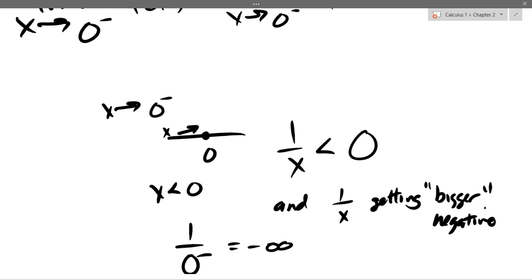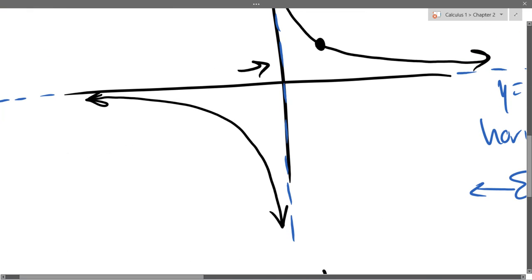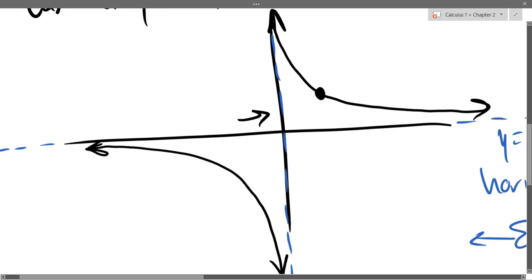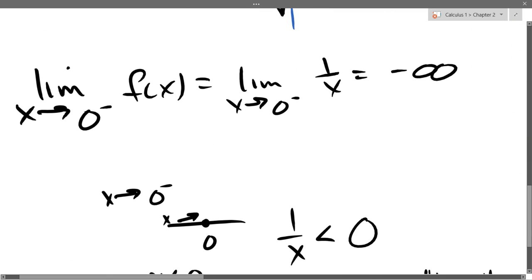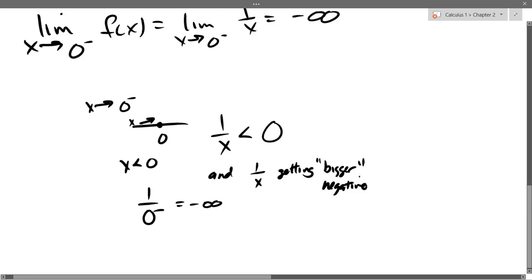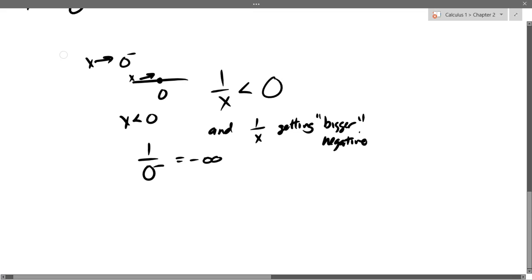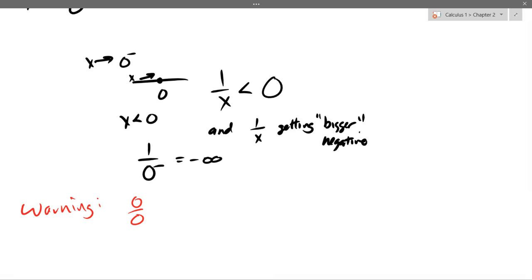You can do these without a graph if you're careful about whether it's positive or negative. For simpler functions like 1/x from our library, it might be easier to just graph it. But for more complicated functions, it might be faster to look at it algebraically. Warning: 1/0 and 0/0 are very different. With 1/0 there's a zero only in the denominator — it goes to infinity. With 0/0 there's zero in the numerator too, and this could be anything. So 0/0 is a lot more dangerous.